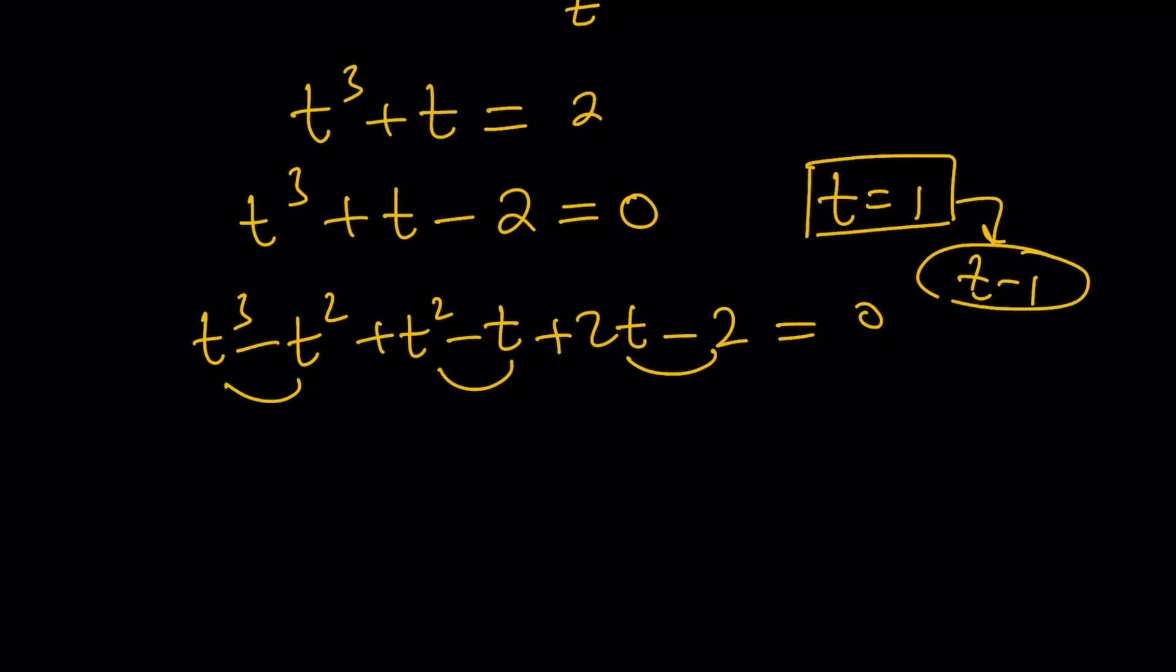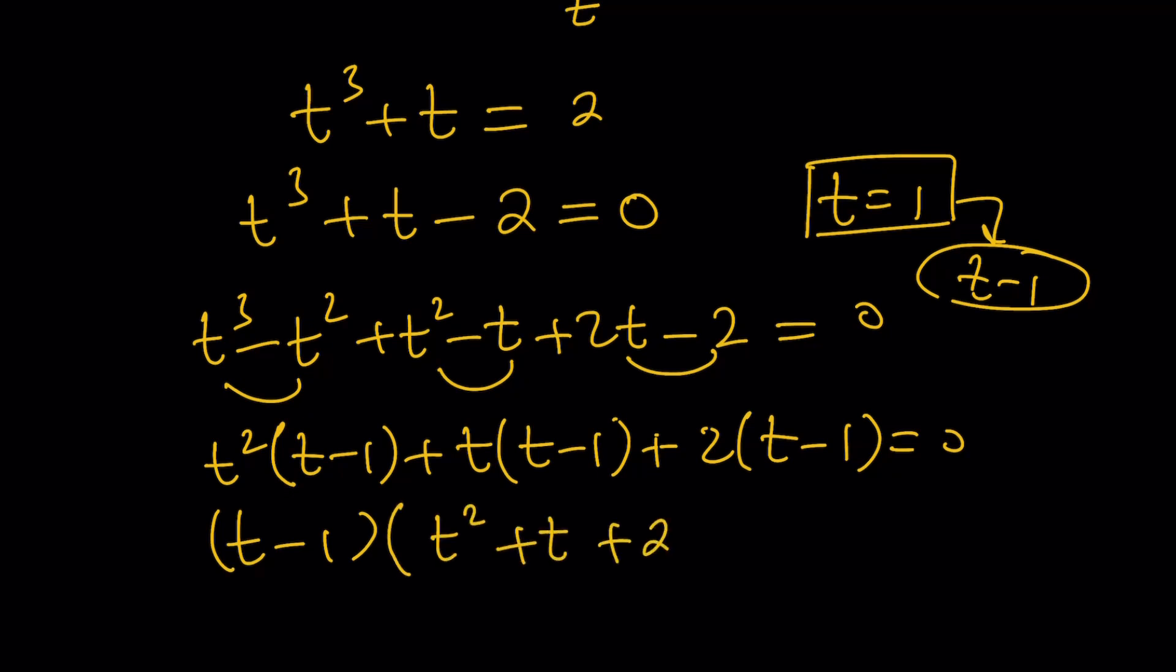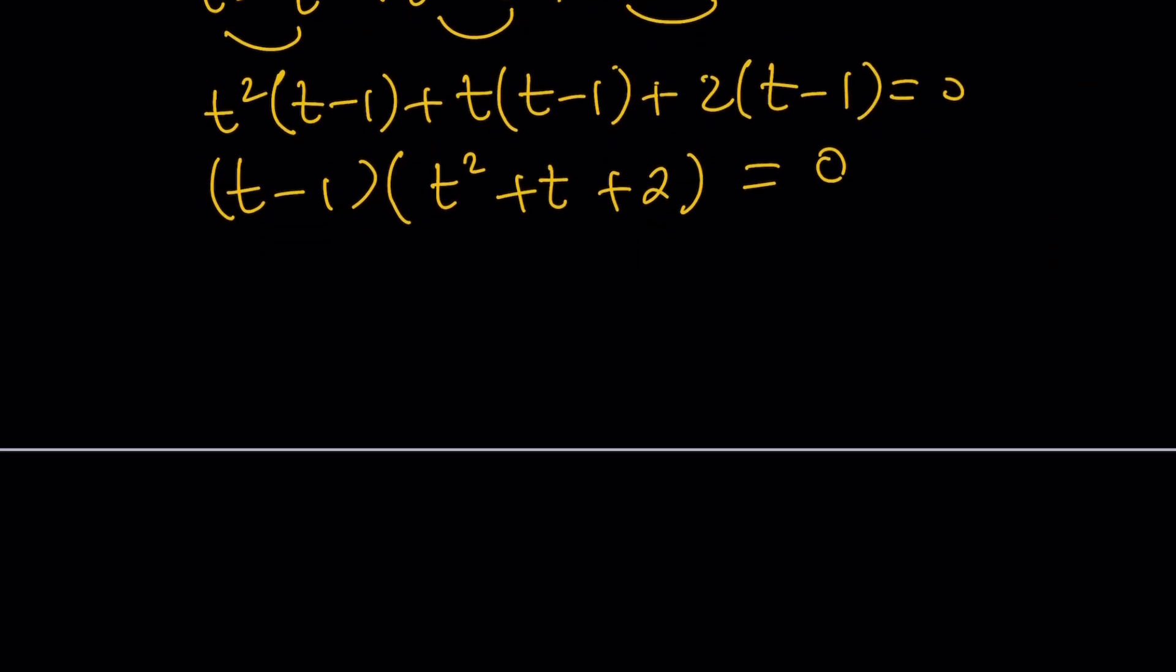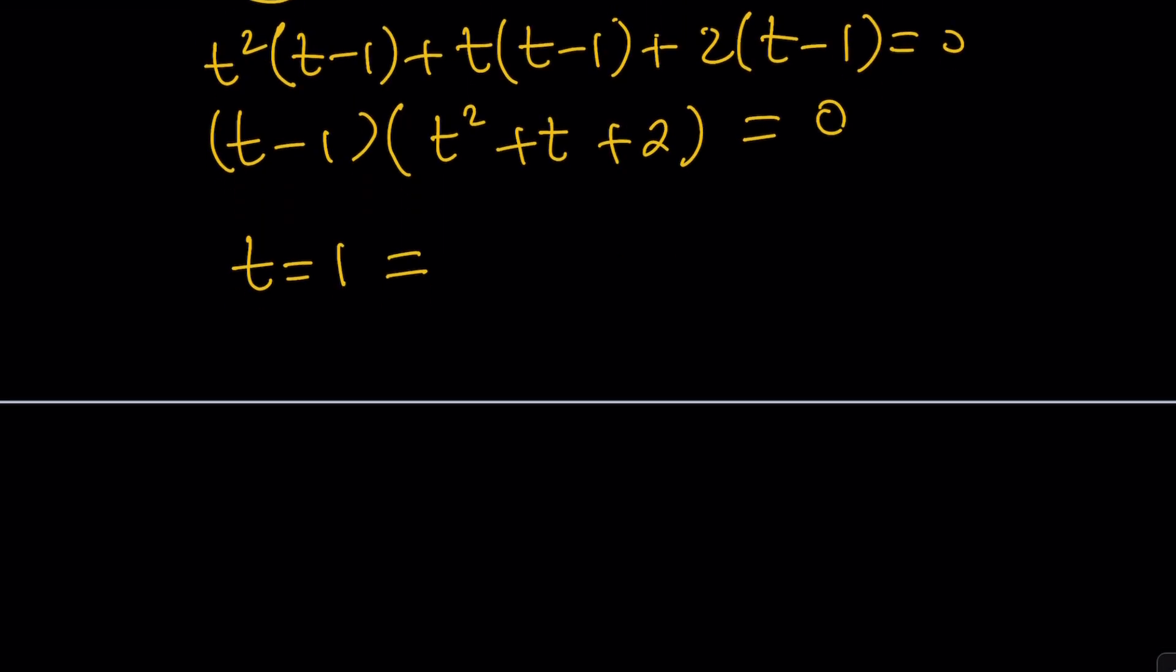Make sense? So from here we get t squared times t minus 1 plus t times t minus 1 plus 2 times t minus 1 equals 0. And then if you take out t minus 1, you get t squared plus t plus 2 equals 0. Awesome. We already knew that t equals 1 is a solution and t is two-thirds to the power of x. Let's make sure we back substitute correctly. And then from here you get x equals 0, because any non-zero number to the 0 power is equal to 1.